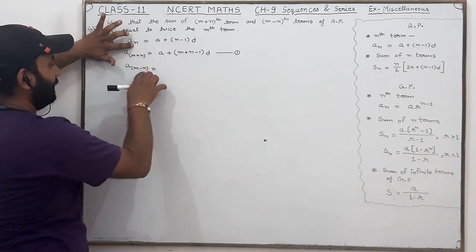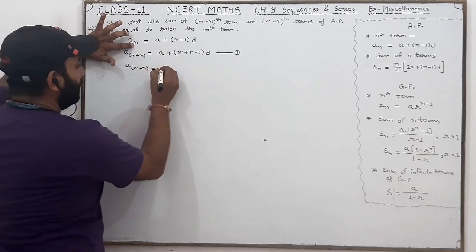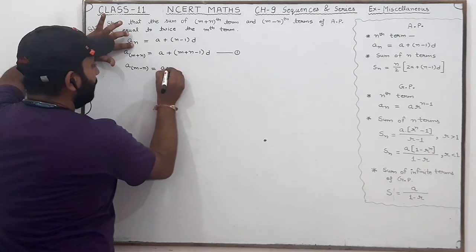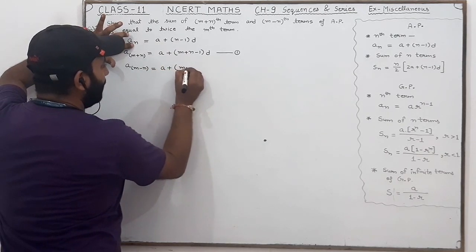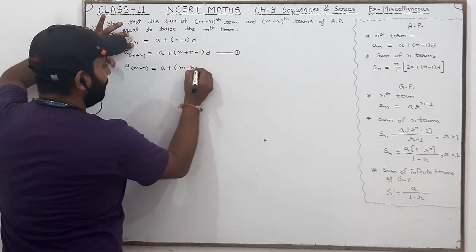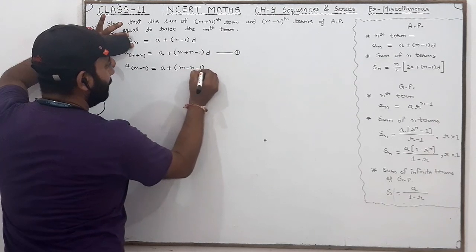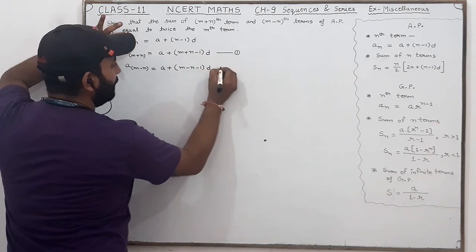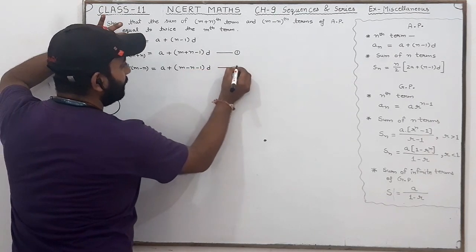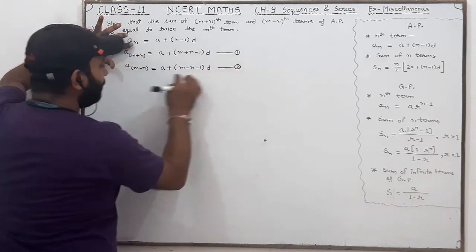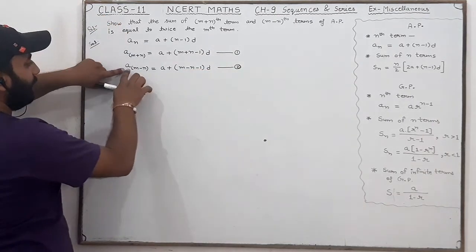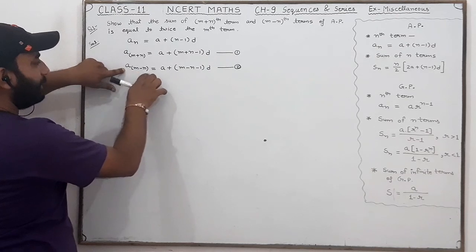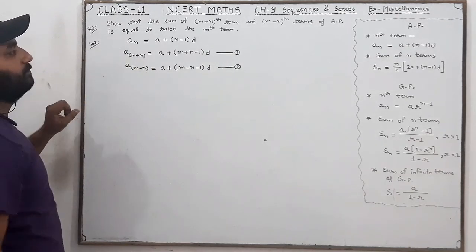Now I will find the (m-n)th term. So I will write a_{m-n} = a + (m-n-1)d. This is our (m-n)th term — this will be equation two.